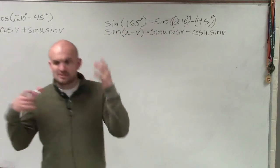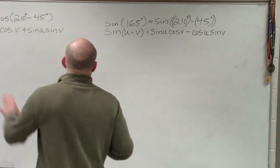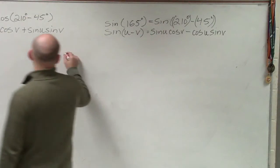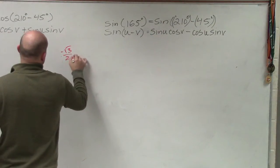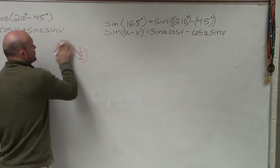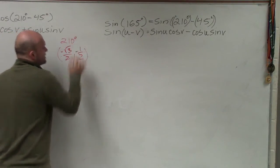So what we did is we looked at the unit circle, and we know that 210 degrees, the coordinate point for 210 degrees is going to be negative square root of 3 over 2, comma, negative 1 half. Right? That's the coordinate point on the unit circle for 210 degrees.